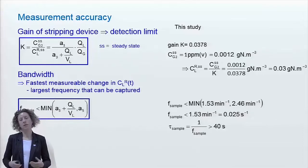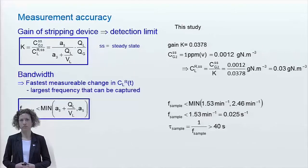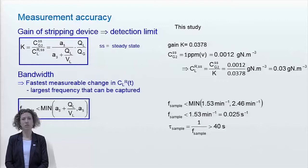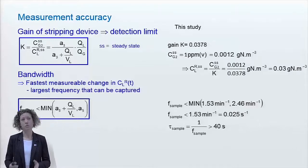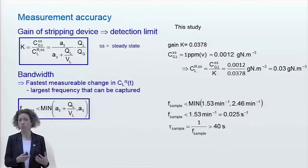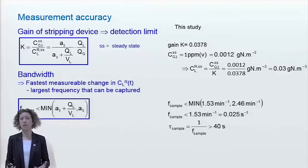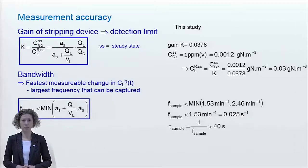If need be, the detection limit and the bandwidth can be adjusted according to the specific needs of the process. So, now we know how to measure the concentration of dissolved gases using the gas stripping method coupled to an online gas phase analyzer. The method is applicable under aerated as well as non-aerated conditions and can be used to monitor the concentration in covered as well as non-covered reactors. It was demonstrated here to monitor dissolved N2O, but it can also be applied to monitor the concentration of other dissolved gases. I hope you find it useful for your application as well.